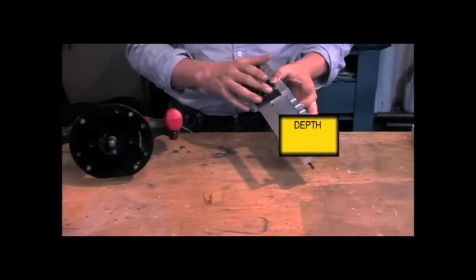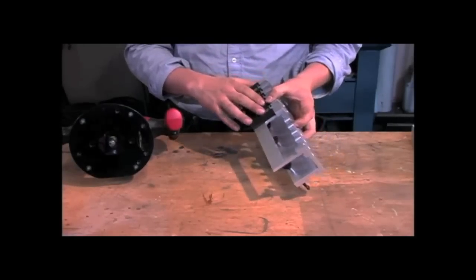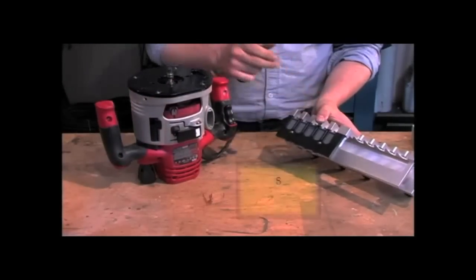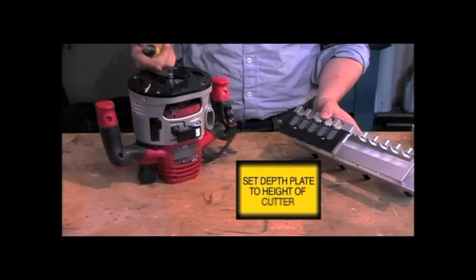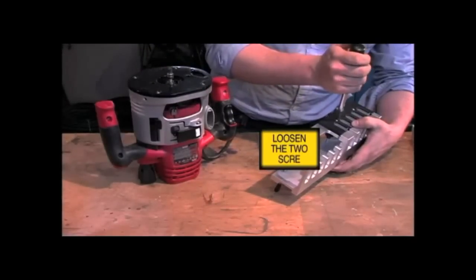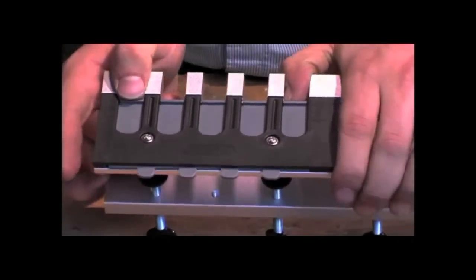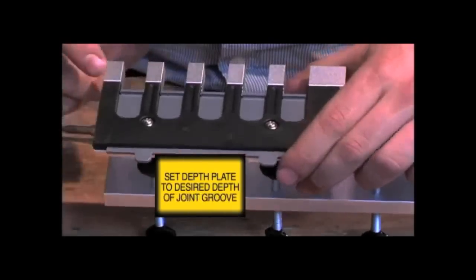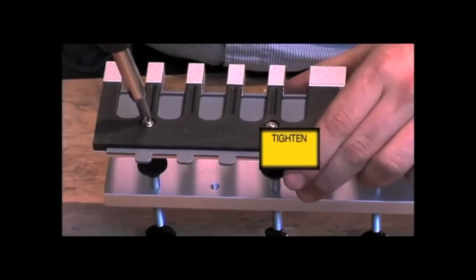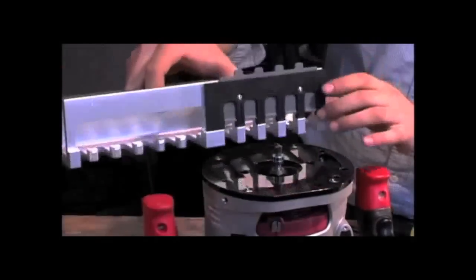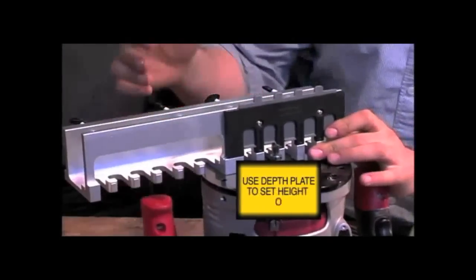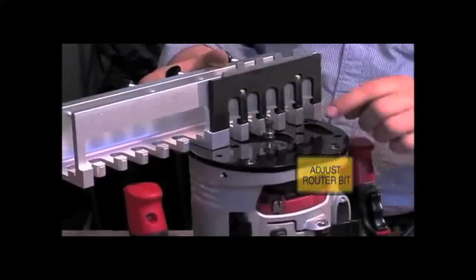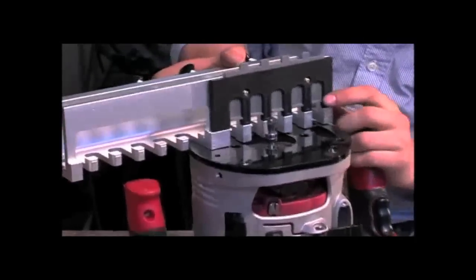The jig has a depth adjustment plate. This can be used to set the height of your dovetail bit in your router. So we're going to set the depth plate to one half inch, which is the height of our cutting bit. We first loosen the two screws that clamp down the adjustment plate and slide down the top edge and align it with the half inch markings on both sides. And then we tighten the plate. Now we're using the depth plate to adjust the height of the router bit. So you adjust the height of your router bit so that it just touches the top of the depth plate.